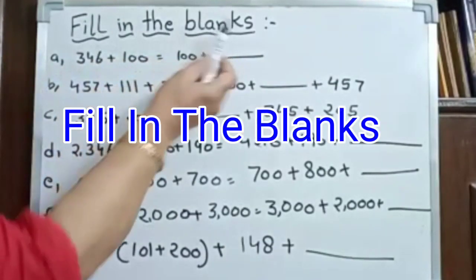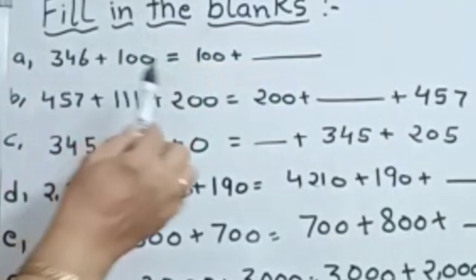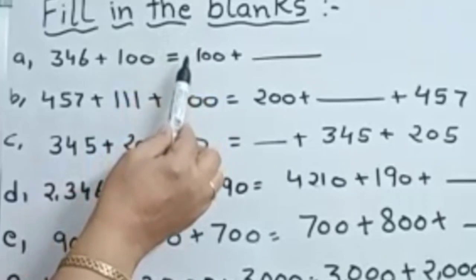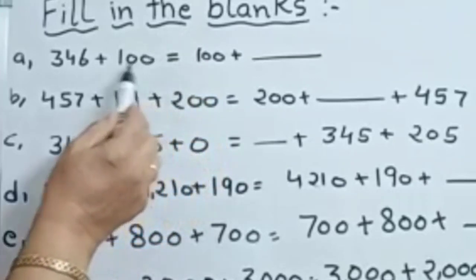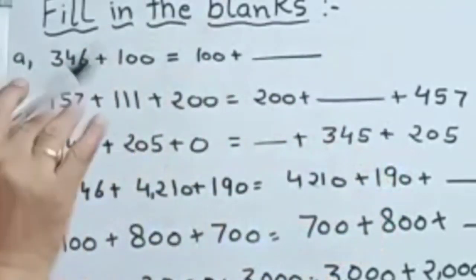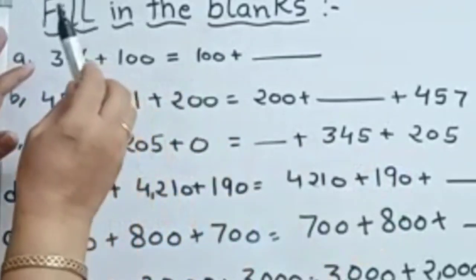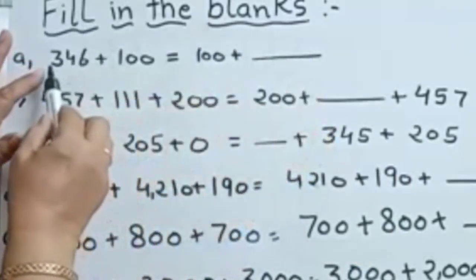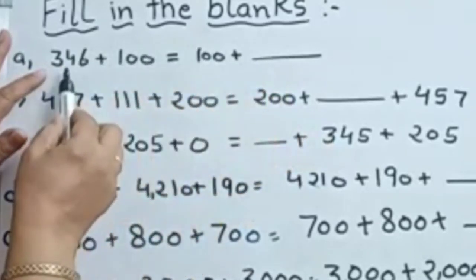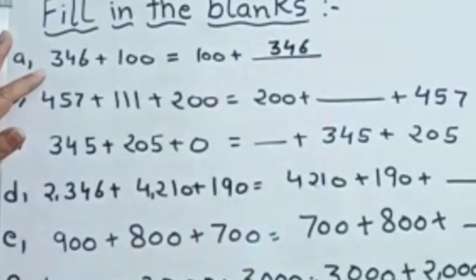Now fill in the blanks. This is mental maths. Whenever we have an equals sign, left side numbers and right side numbers are equal. So don't do any calculation — just use your mind and see which digit is missing. For example: 346 plus 100 is equal to 100 plus blank. The missing number is 346. Very easy.